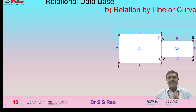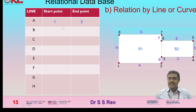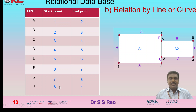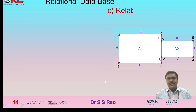The next category is relation by line or curve. The object is bounded by eight lines: A, B, C, D, E, F, G, H. In tabular form, each line has a start point and end point — line A: points one and two; line B: two and three; line C: three and four; line D: four and five; line E: five and six; line F: six and seven; line G: seven and eight; line H: eight and one.